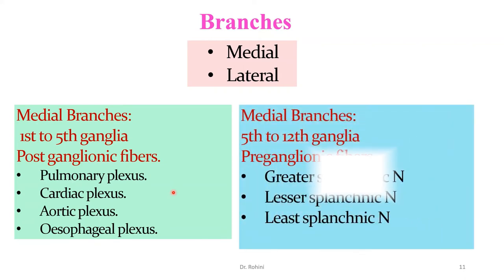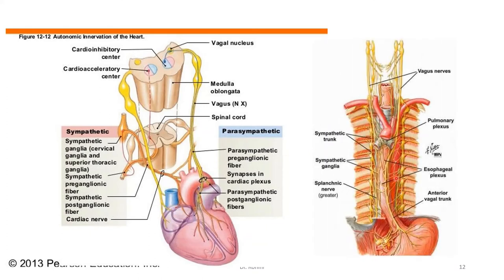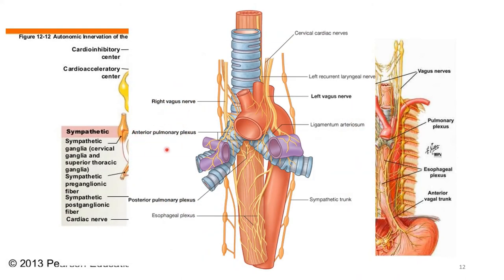The medial branches from the 5th or 6th to 12th ganglia carry preganglionic fibers that give rise to the splanchnic nerves — greater, lesser, and least — which we will discuss in detail. You can see the sympathetic ganglia giving fibers to the cardiac plexus and esophageal plexus, and forming the anterior and posterior pulmonary plexuses around the pulmonary vessels.